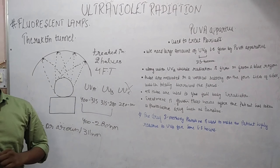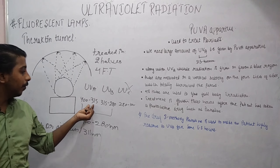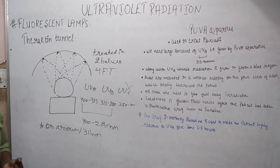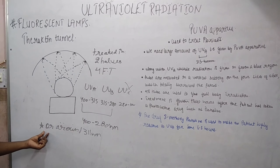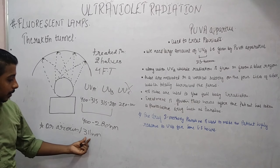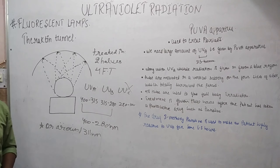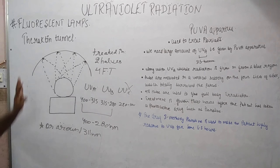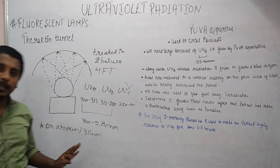The output around 311 nanometers is UVA only. So this is about the theractin tunnel.